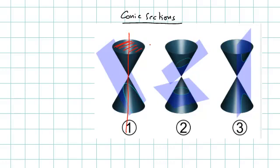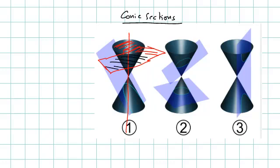If I cut this cone with a plane that is perpendicular to the axis of the cone, I am explaining the circle case. So if you cut it by a plane like this, which is perpendicular to this axis, the cross section of the cone will be a circle — a circular cross section.